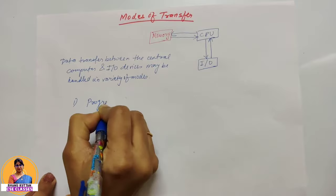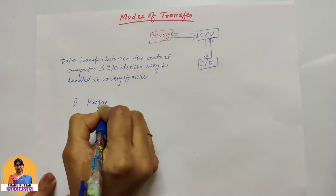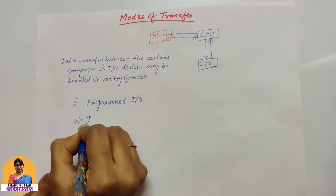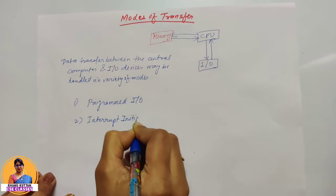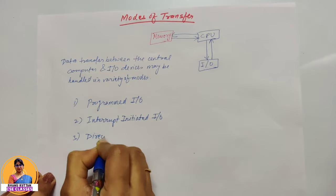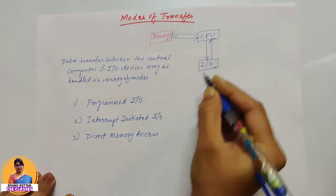One is programmed I/O. Second is interrupt initiated I/O. And third one is direct memory access. These are three modes through which CPU and I/O devices do data transfer.